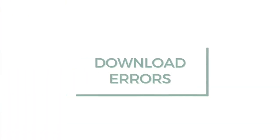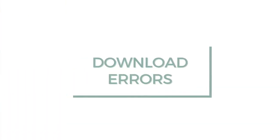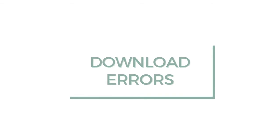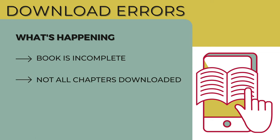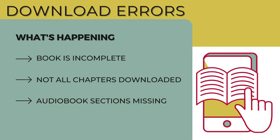If you're using the OverDrive app, you might find yourself in a situation where the book or audiobook you've tried to download has downloaded in parts — maybe you didn't get the complete book or all of its chapters and pages. Sometimes the culprit is a bad internet connection, and one way to resolve this without having to return the book and go back on a hold list is to try removing the downloaded files and then downloading the book again.